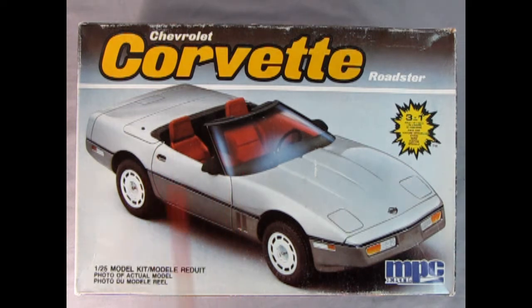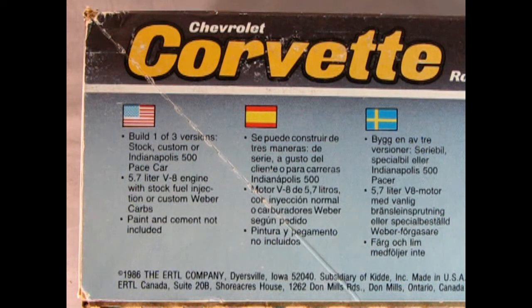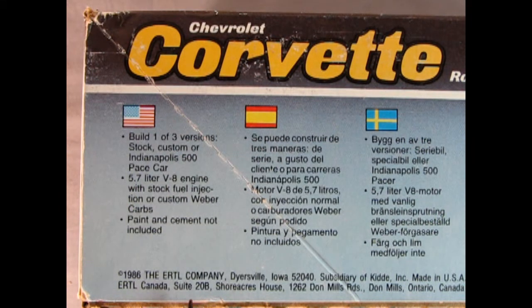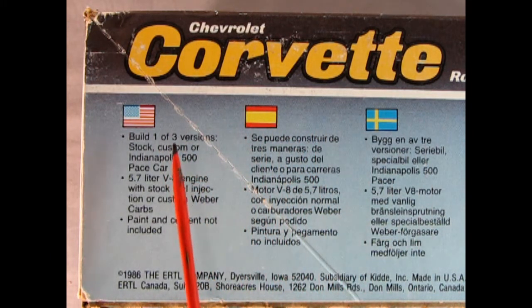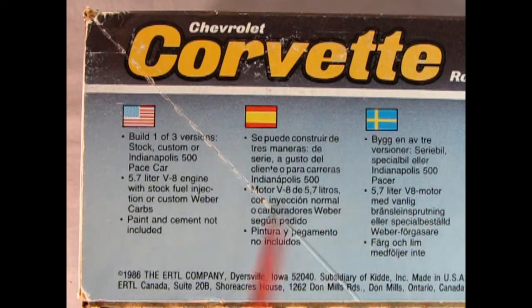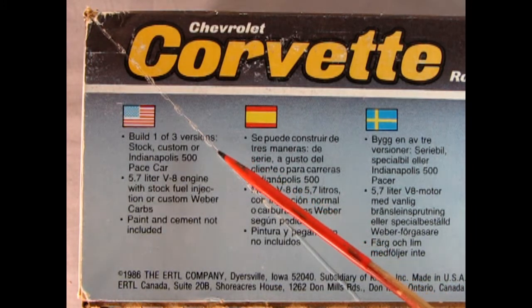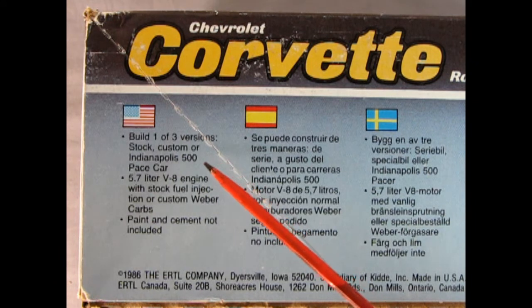1986 also saw the return of the Corvette convertible, the first time since 1975. Here we have the Chevrolet Corvette roadster three-in-one kit by MPC. This model kit is in 1/25th scale, and this is the photo of the actual built-up model. On the side of the box we can read that this is an authentic 1986 ERTL company model kit of the Chevrolet Corvette roadster.